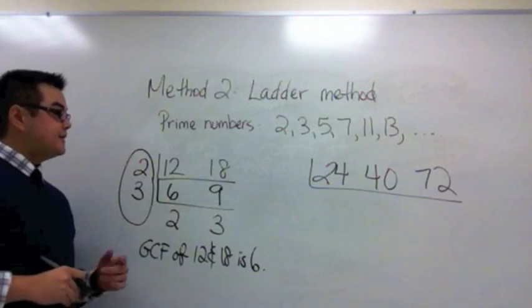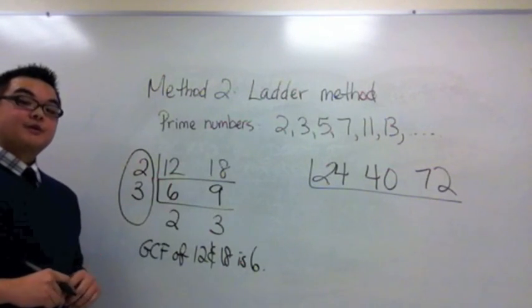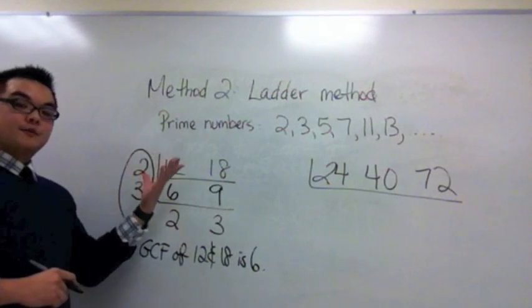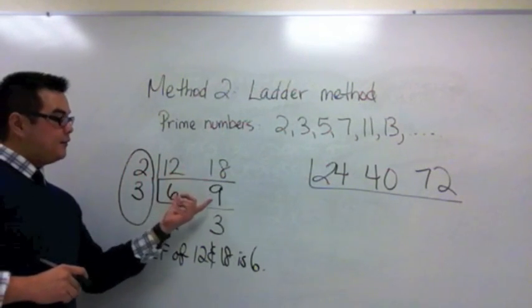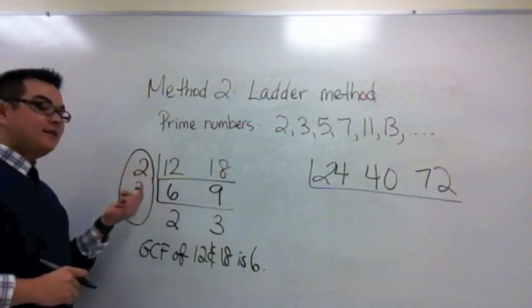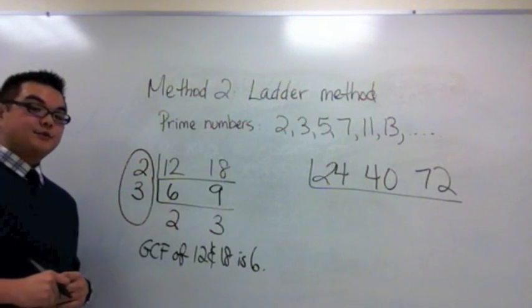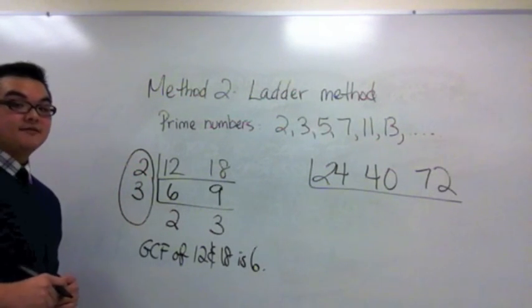Some of you might have noticed that 3 also goes into 12 and 18. When we use 3 here we will still get the same answer. The ladder will look a little differently but on the left side you will still be multiplying 2 and 3 together to get the same GCF of 6.